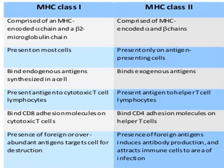Comparing class 1 and class 2 MHC: class 1 comprises one polypeptide chain and beta-2 microglobulin, while class 2 comprises two polypeptide chains. Class 1 is present on most nucleated cells; class 2 is present on antigen-presenting cells. Class 1 presents antigen to CD8-positive cytotoxic T cells, while class 2 presents antigen to CD4-positive helper T cells.